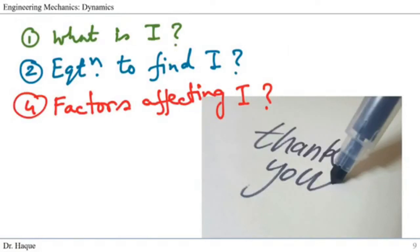In this short webcast we briefly described what mass moment of inertia is, showed the equation used to find it, and discussed five factors that may affect it. That should improve your understanding of mass moment of inertia. In the next video we are going to talk about the parallel axis theorem. Till then, thank you.